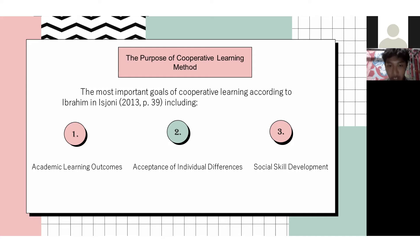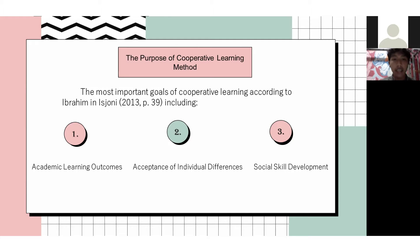The last purpose is social skill development. Cooperative learning teaches students the skills to work together and help each other. It is important for students to have social skills because currently many young people are still lacking in social skills.